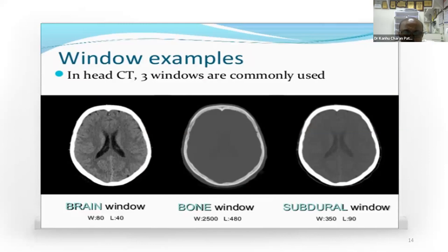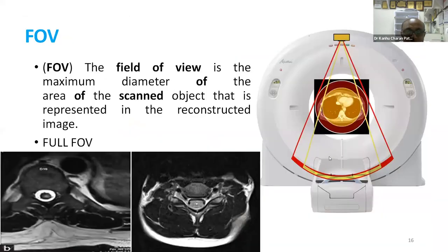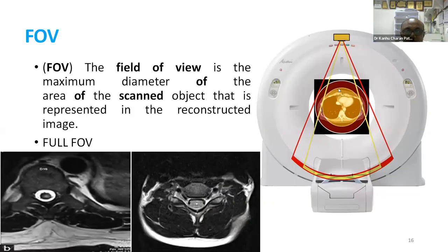Windowing is very important in neuroimaging. We have three windows: brain window, bone window, and subdural window — to see more soft tissues, more bone, and the subdural area respectively. Bore is the total diameter of the CT scan opening, while FOV is the end-to-end diameter of the imaging capture area.